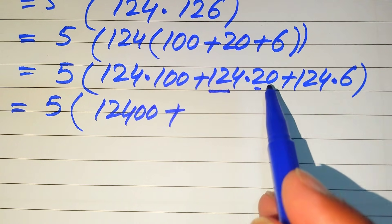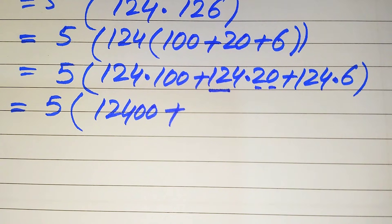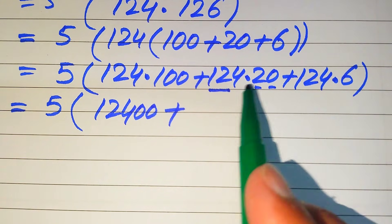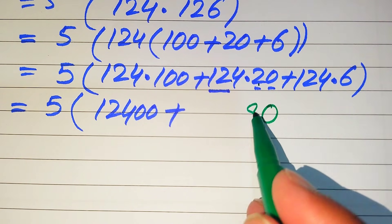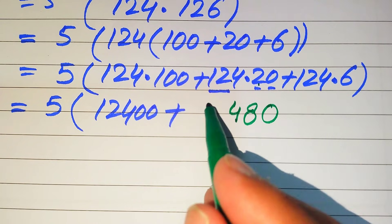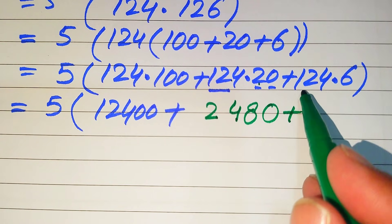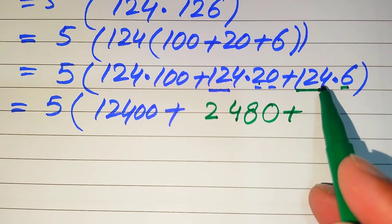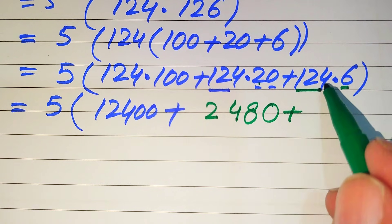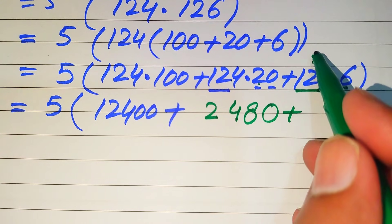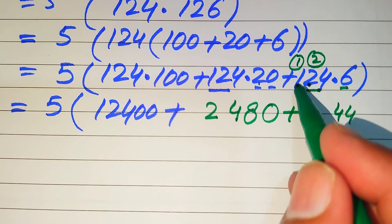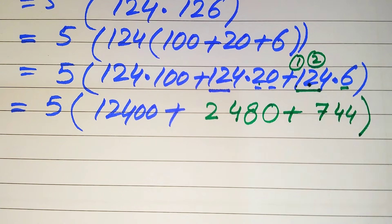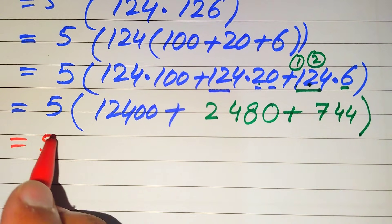For 124 times 100, we get 12,400. For 124 times 20: 0 times the number gives 0, and 2 times 124 gives 248, so that is 2,480. For 124 times 6: 6 times 4 is 24, write 4 carry 2; 6 times 2 is 12, plus 2 is 14, write 4 carry 1; 6 times 1 is 6, plus 1 is 7. So 124 times 6 equals 744.